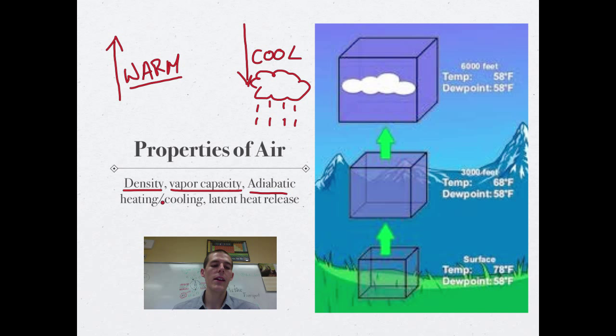Cool air doesn't hold very much water vapor. When air cools down, that water vapor condenses into a cloud, and it starts to rain. Big words for you: adiabatic heating and cooling. What this means is as air becomes more or less dense, its temperature changes. If you take air and put pressure on it and shrink it down, you're packing those molecules closer together, which makes them warm up. If air rises up through the atmosphere, the pressure decreases, it expands, and as it expands, it will cool down.